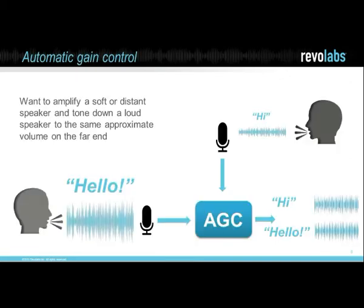Moving on to gain control — does that mean volume control? Yes, it does. It's not just playback volume on your side, but the input volume heard on the far end loudspeakers. What you're trying to do is compensate for differences between people speaking in a room — their relative volume levels, the microphones, and how far away they are. The farther from a microphone, the lower the voice. An AGC system will diminish the signal of a loud speaker and increase the signal of a soft speaker so they all come out at approximately the same volume level on the far end.